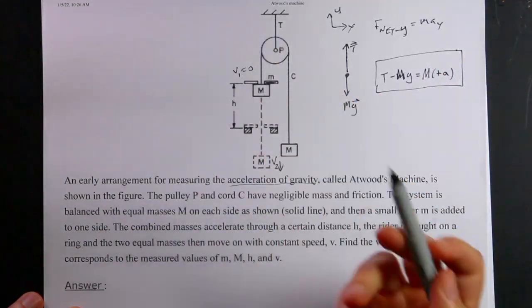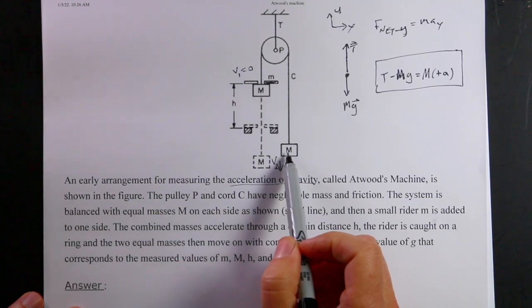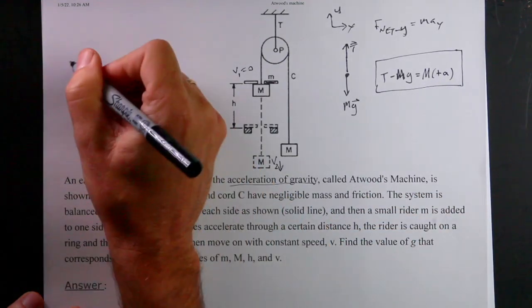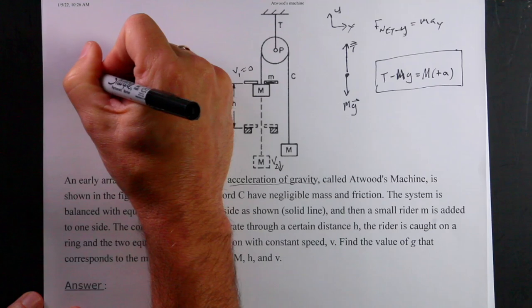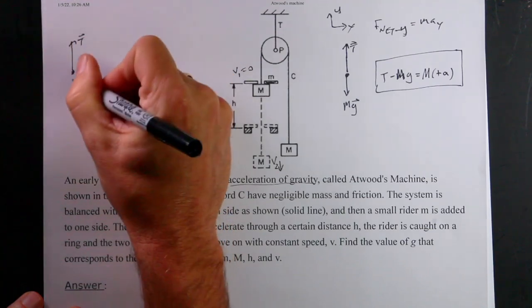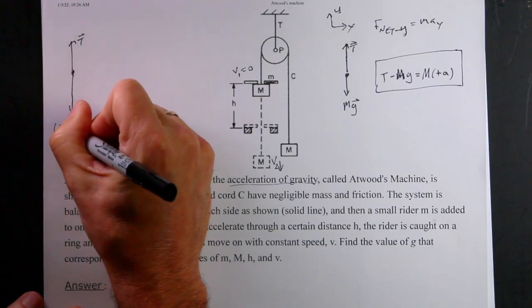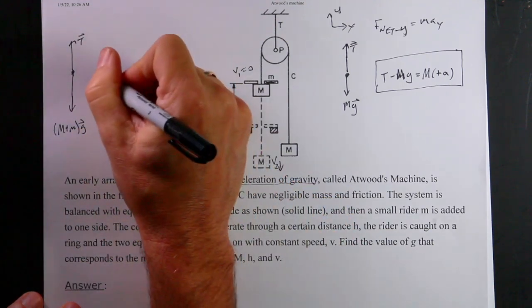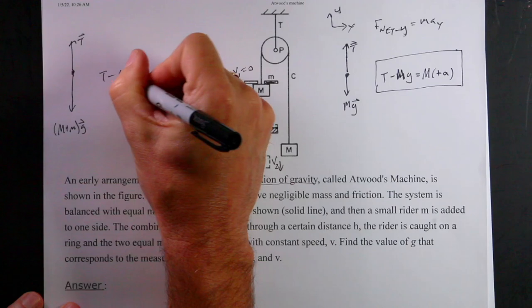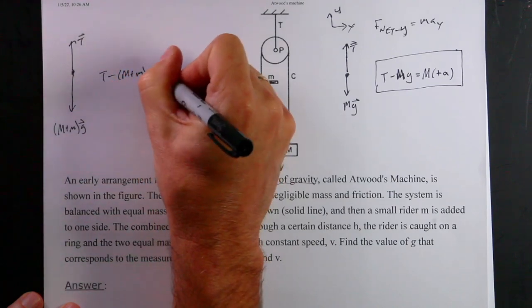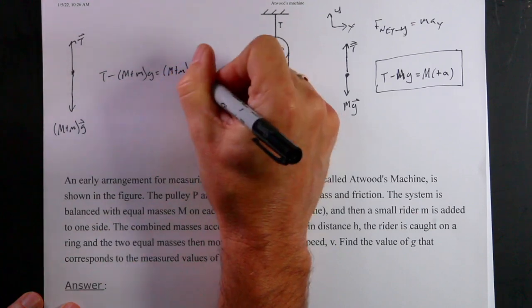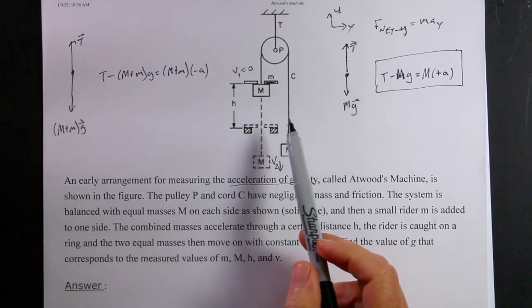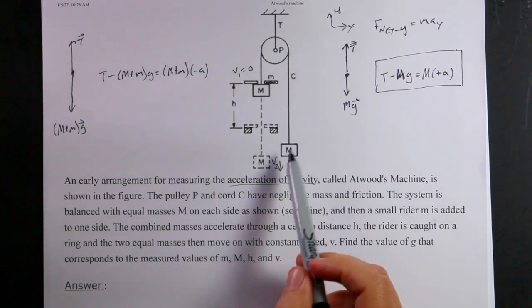So I have, again, the tension pulling up, and then the gravitational force pulling down, which will be bigger. It'll be M plus M times G, because it has the extra mass on it, and that's the vector G. But in the Y direction, I can say T minus M plus M G equals M plus M negative A, because it's going to accelerate down. Now, so we have two things in common for these two masses. Number one, they have the same magnitude of acceleration, and number two, they have the same string.